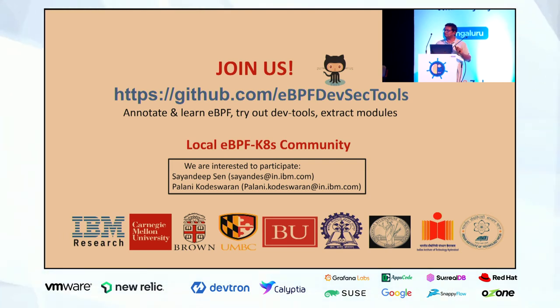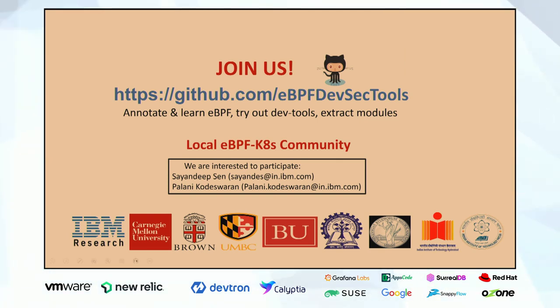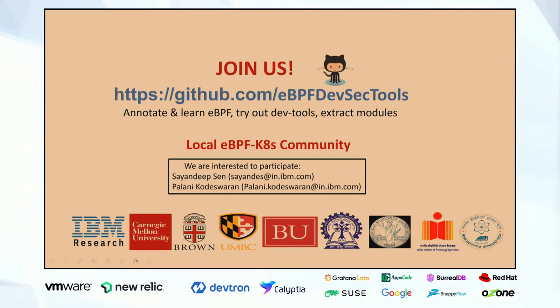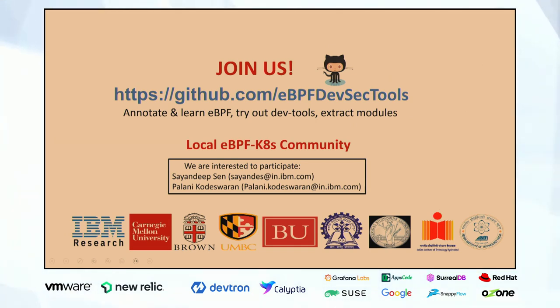Q&A: How can you supersede the existing kernel if you are doing things in a sandbox? An example: if you want to monitor anytime a file gets opened, the kernel gives you a bunch of hook points — places where you can attach a piece of code and it will execute. Once your code is verified and loaded, for performance reasons, the kernel generates machine code and runs it natively. So it's essentially sandbox-kind security with the performance of native code.